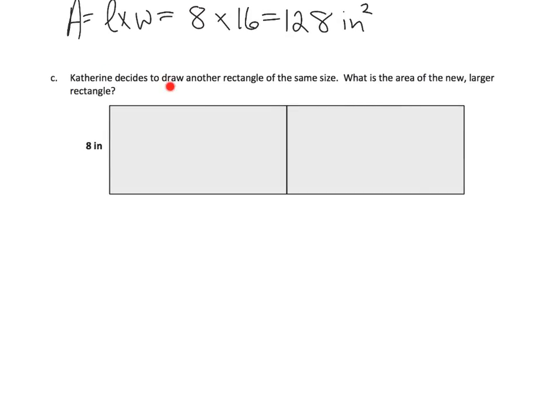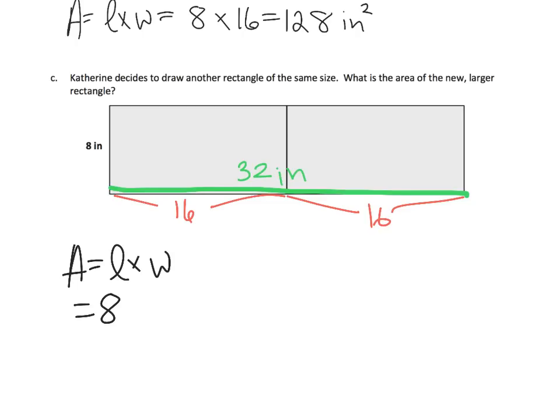The last part says Katherine decides to draw another rectangle the same size and arrange it this way. What's the area of the new rectangle? Well, we've got to keep in mind this was 16, which means this is 16, which means the entire width here must be 32 inches. So the area is length times width. In this case it's going to be 8 times 32, which is going to be 256 square inches.